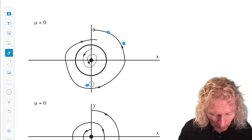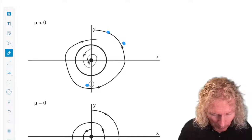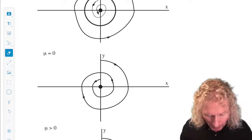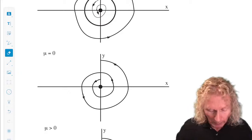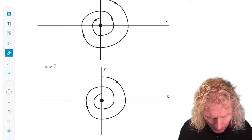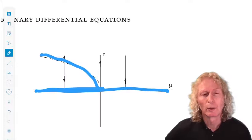At mu equals zero, the periodic orbit shrinks to zero, and we just have a non-hyperbolic unstable point. And for mu greater than zero, we have a source, an unstable equilibrium point, and no periodic orbits.